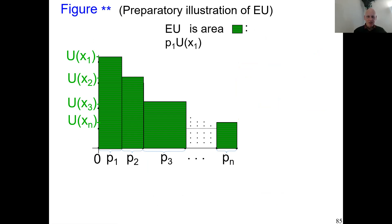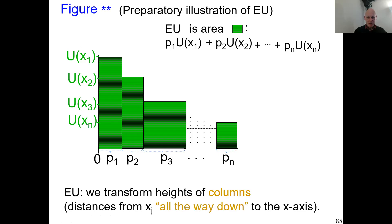The expected utility is p1 times the utility of x1. We transform the distance of x1 all the way down to the axis into its u value, then transform the distance of x2 all the way down to the x-axis by its u value, and so on. That way we get the green area, and that area is the expected utility.